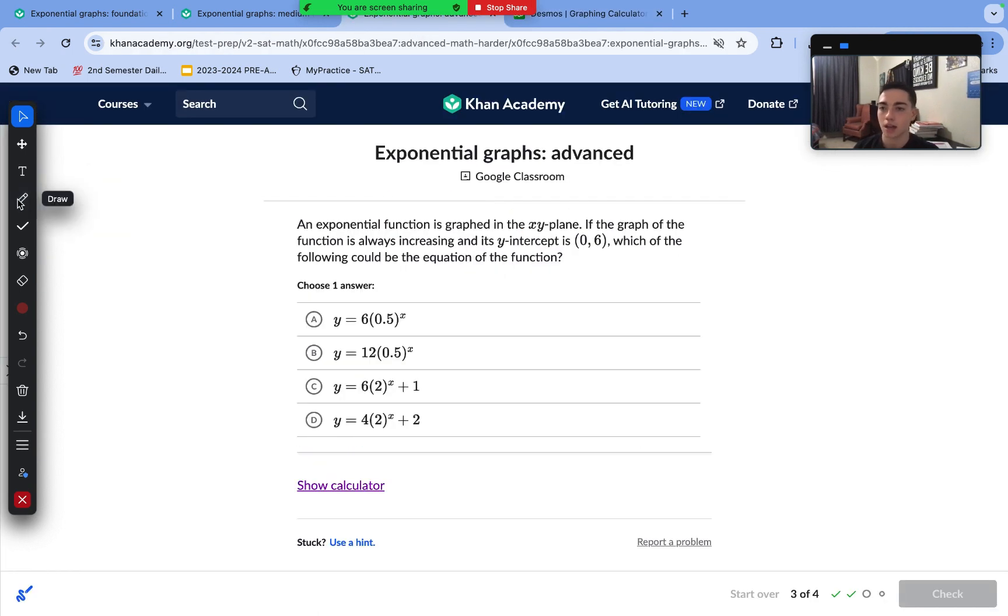On to our second to last question, an exponential function is graphed. If the graph is always increasing and the y-intercept is (0, 6), which of the following could be an equation. So we know always increasing. That crosses out answer choices A and B immediately. Since B in those is less than 1, that means they're experiencing exponential decay, which is decreasing.